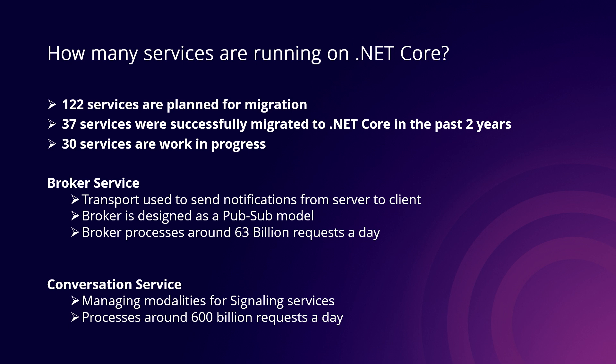The first service is the broker service, which is one of the transports we use to send notifications from server to client. It's based on a pub-sub model, and on its own it processes around 63 billion requests a day. You can imagine how critical it is to improve the performance and cost of running this service, as well as avoiding regressions during the migration.